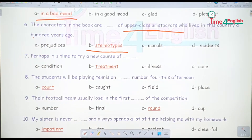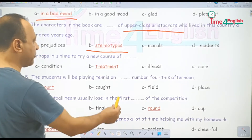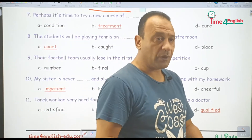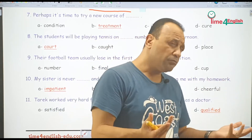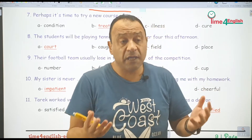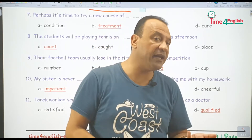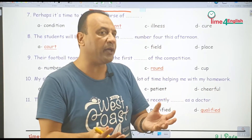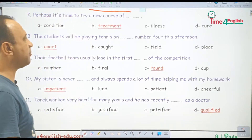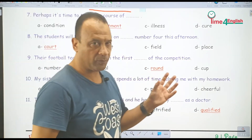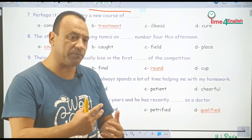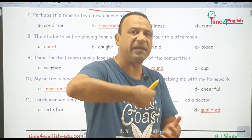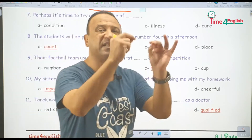Perhaps it's time to try a new course of treatment. بتتكلم مع مريض، والظاهر أن العلاج اللي بياخده مش مؤثر. يمكن حان الوقت إننا نغير العلاج بعلاج تاني — a new course of treatment يعني مجموعة من الأدوية الجديدة أو طرق العلاج. مش هنستخدم cure هنا لأن cure معناها الشفاء التام من مرض، أما treatment فهو أنماط وأدوية وأساليب العلاج.